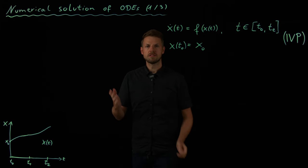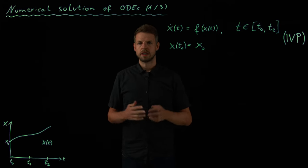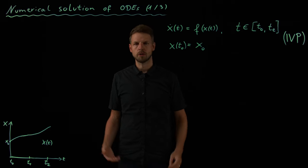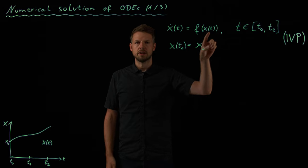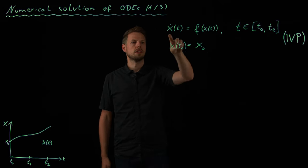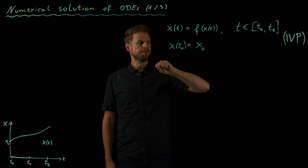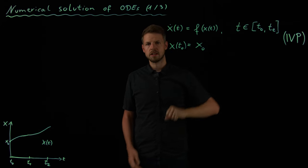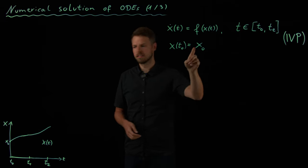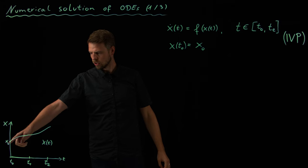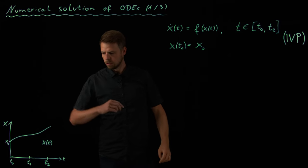Welcome back. In the last video we have seen how we can determine or describe a dynamic system using an ordinary differential equation of such a type here. We have seen we have a law that describes how the time derivative is defined. We have an initial condition and due to this we call this an initial value problem, meaning we start at x0. In the bottom left you see the plot here. We have an initial condition and from this on the system evolves over time.